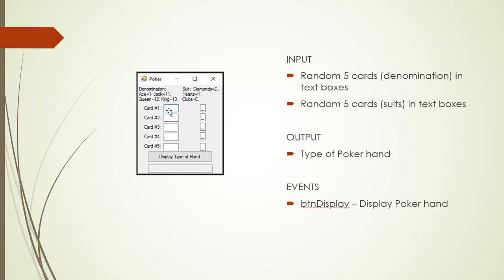Here's our form — we will enter the cards as numbers. Ace will be one, Jack eleven, Queen twelve, King thirteen, and all other numbers like two through ten as well. We will place the suit in a second set of text boxes. These are masked text boxes designed to accept only letters. The only letters expected are D for diamonds, H for hearts, C for clubs, and S for spades. Once we enter the denominations and suit, we click 'Display Type of Hand' to show what type of hand we have.